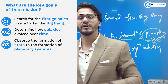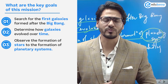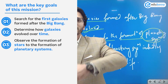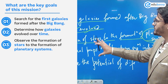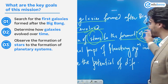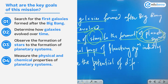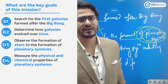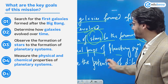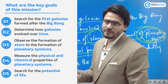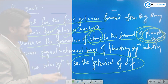Third, observe the formation of stars — from stellar gas and dust clouds, to the core formation, birth, and finally the death of a star as a black hole or neutron star. Fourth, study the formation of planetary systems including our own solar system. Fifth, measure the physical and chemical properties of planetary systems, and sixth, search for the potential of life on other planets.